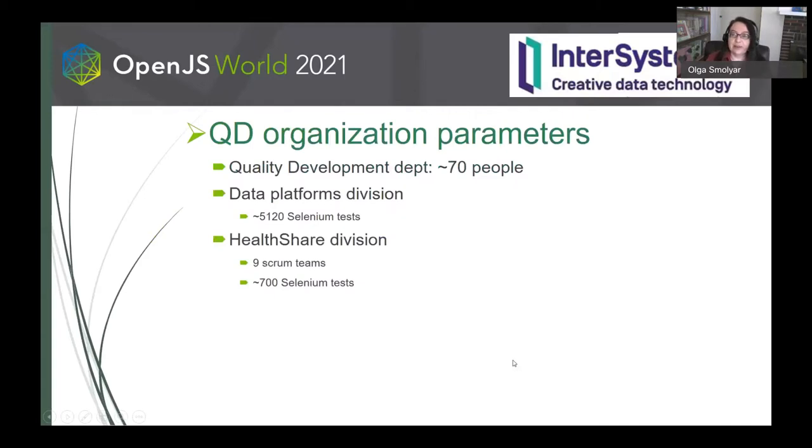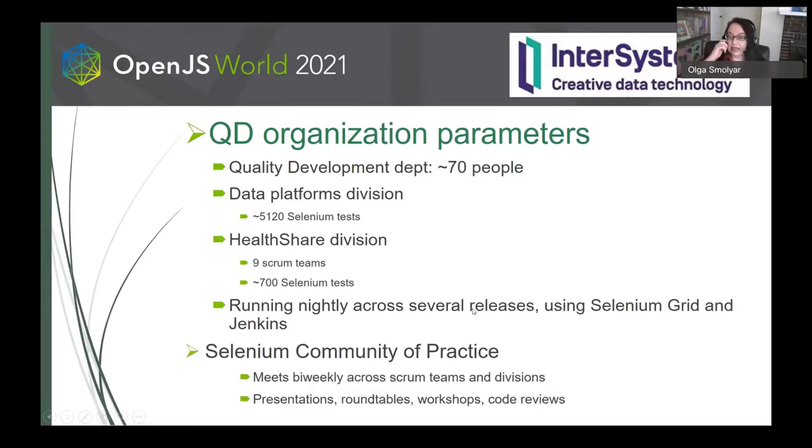The quality development organization consists of about 70 people. The data platforms division runs a little over 5,000 Selenium tests and many tens of thousands of other backend tests, and the HealthShare division which uses an Agile methodology consists of nine Scrum teams running about 700 Selenium tests currently using Selenium Grid and Jenkins. We also have a Selenium Community of Practice, which meets bi-weekly across these various Scrum teams and divisions, and hosts presentations, roundtables, workshops, and code reviews. It has also been instrumental in extending the framework which we're going to look at.